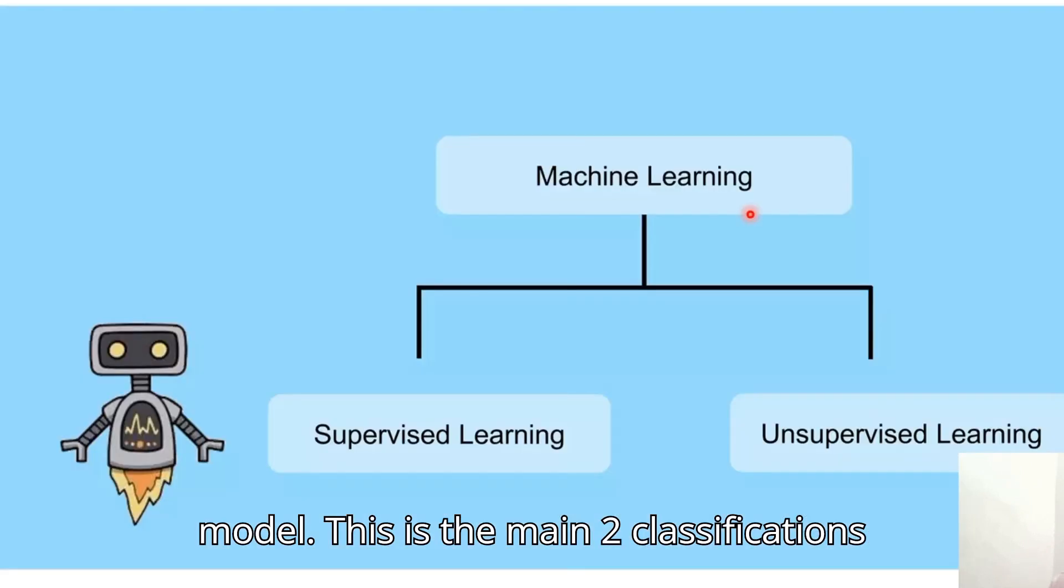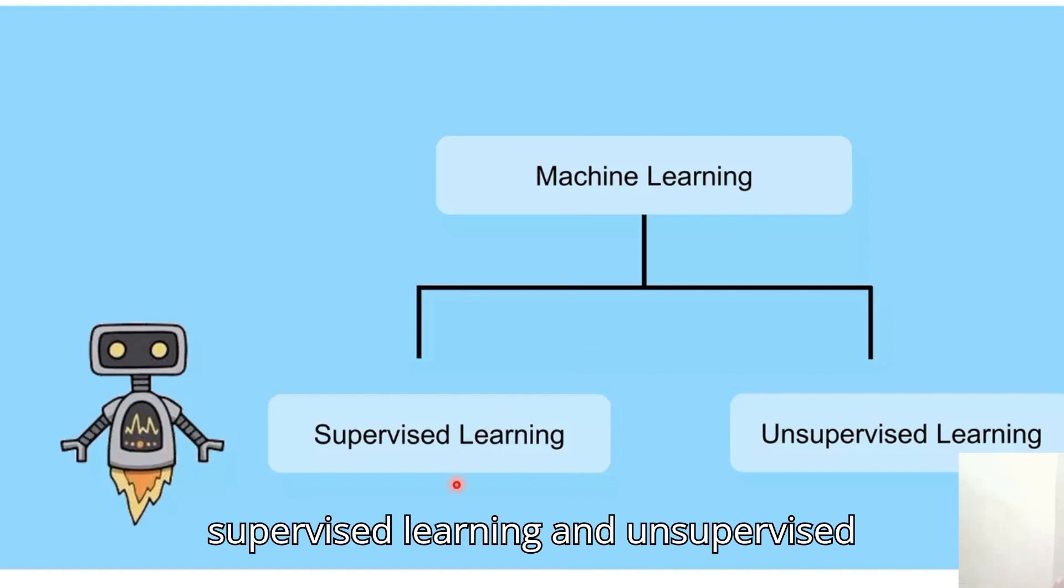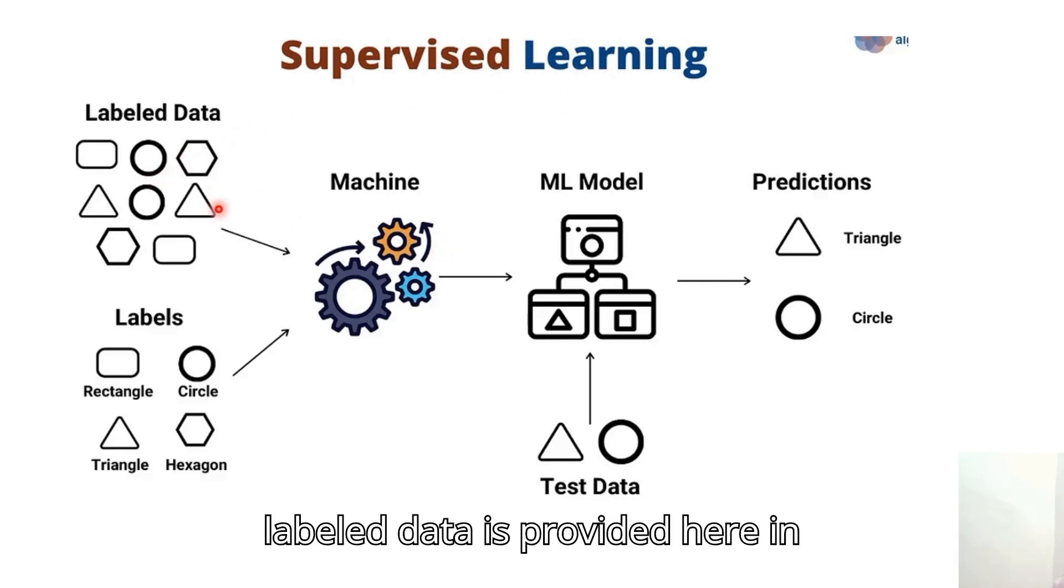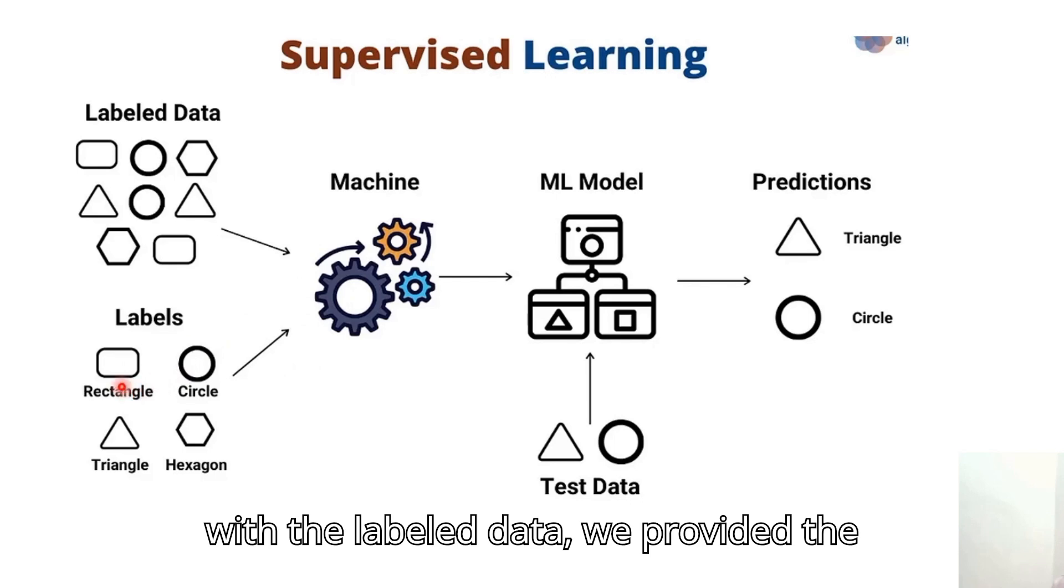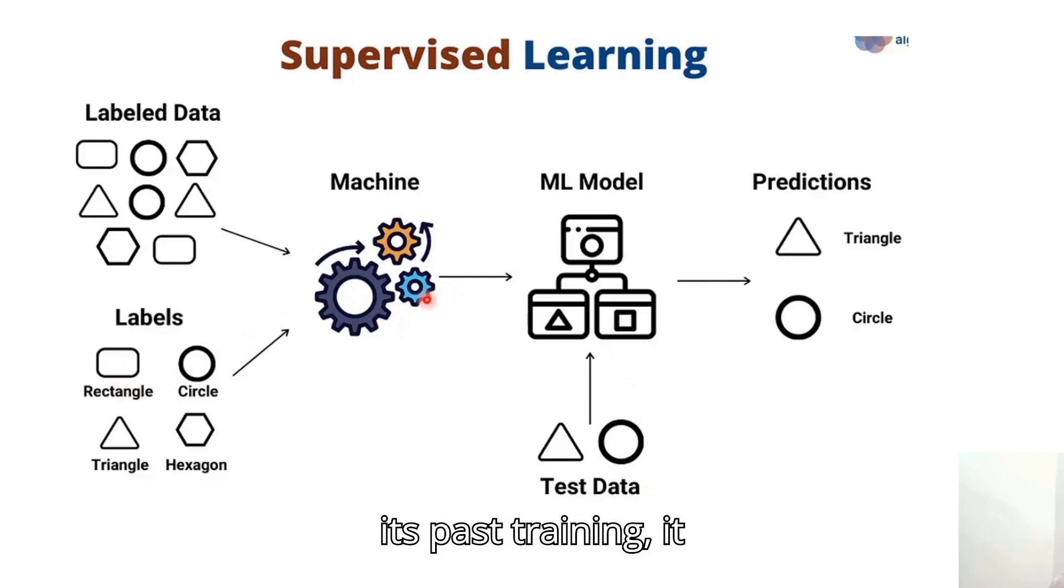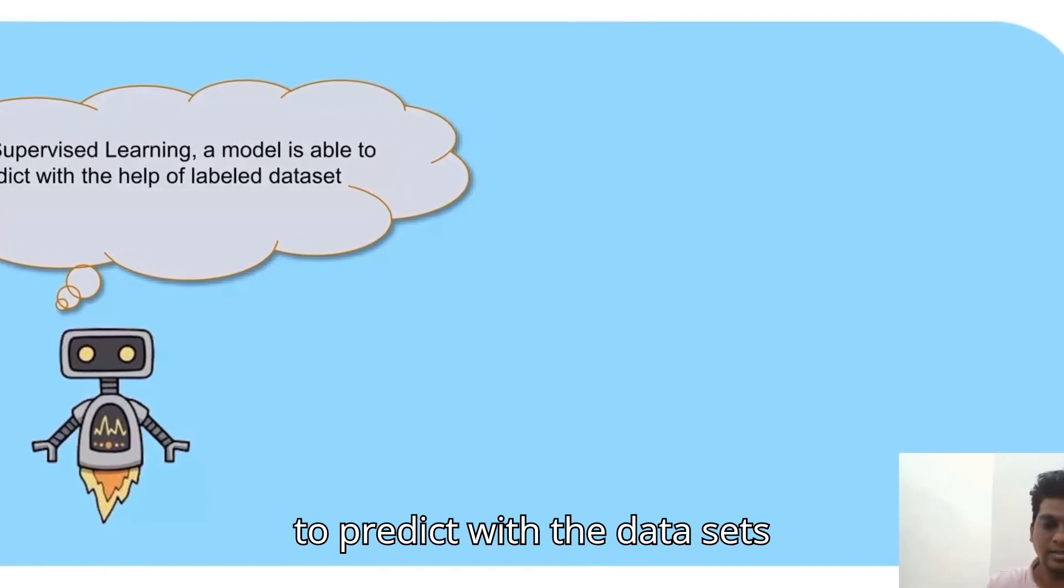The main two classifications of machine learning are supervised learning and unsupervised learning. In supervised learning, labeled data is provided. It's trained with different structures like rectangles, circles, triangles, and hexagons. Every input is trained with labeled data. When test data is provided, based on its past training, it provides the output correctly.